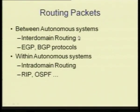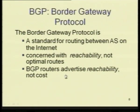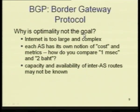The BGP protocol is the standard for routing between autonomous systems on the internet. The idea here is reachability — you are concerned with reaching one autonomous system and different networks, not trying to get optimal routes. That is how BGP has been designed: BGP routers advertise reachability, not cost. Reachability is more important here because the internet is too large and complex, and each autonomous system has its own notion of cost and metrics.